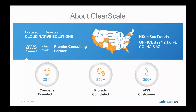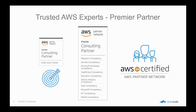ClearScale is an AWS premier consulting partner. We started in Silicon Valley in 2011 and have completed over 850 projects for more than 250 Amazon customers. We have 10 AWS partner competencies such as data and analytics, migrations, DevOps, and SaaS. Our engineering team holds over 100 AWS certifications.